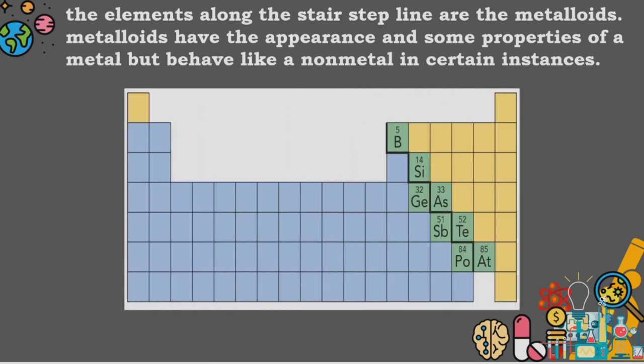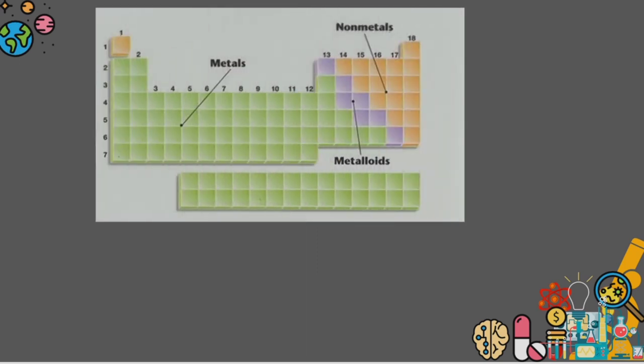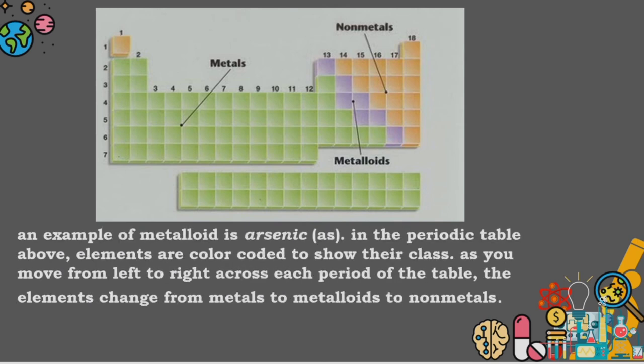Metalloids have the appearance and some properties of a metal, but behave like a nonmetal in certain instances. An example of metalloid is arsenic. Arsenic is the element in photograph.